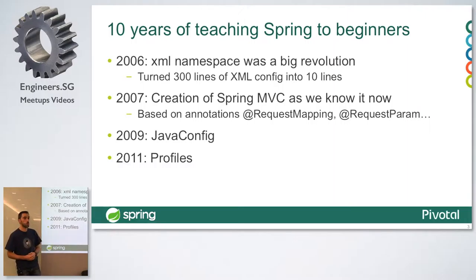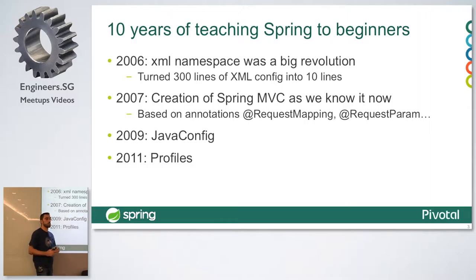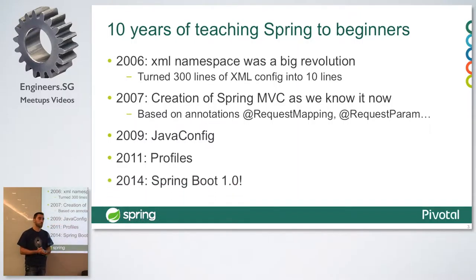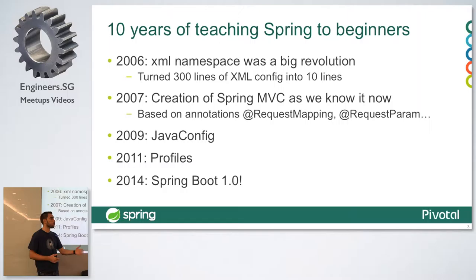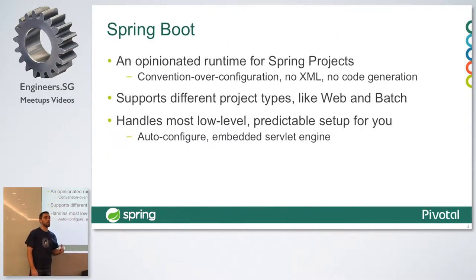In Spring 3.1, profiles were introduced — a really nice addition that allows you to have configuration for different environments, such as a datasource for testing, production, or QA. Finally, version 1 of Spring Boot came out in 2014 and had really good traction and adoption. Spring Boot happens to be one of the most downloaded frameworks, and I would say it's the most downloaded framework for microservices as well.